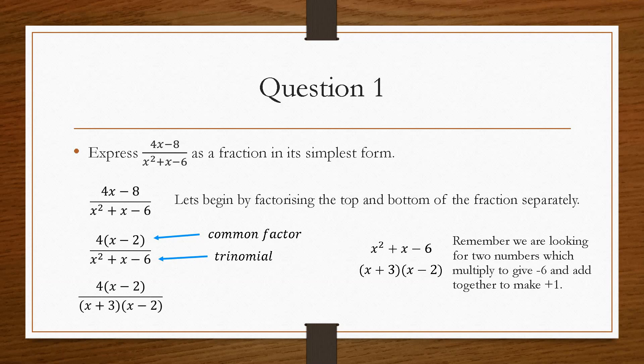And then if we replace the trinomial with the two brackets, we can see, and with all algebraic fraction questions, something will cancel on the top and the bottom of the fraction. That is basically the whole point of the question. In this case, we have the common factor of x minus 2 and x minus 2. So we can cancel these two out, and that will give us a final answer of 4 over x plus 3. And that's how you would go about solving that kind of problem there.